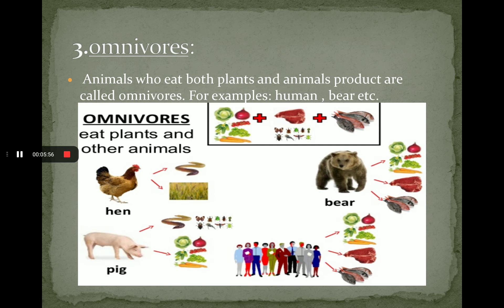In the next slide, the third category is omnivores. Animals who eat both plant and animal products are called omnivores. For example, hen eats grass as well as some insects. Pig eats plant products as well as insects. The best example is human beings — human beings eat plant products as well as animal products and meat. So all are considered in the category of omnivores.